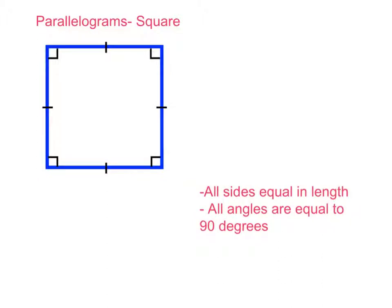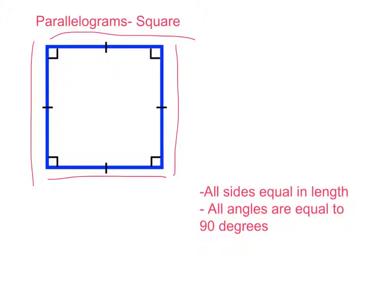Squares are pretty straightforward. All sides are equal in length — this side equal to this side, equal to this side, equal to this side. We can also tell this because of our annotations. The second property: all angles are equal to 90 degrees — not just opposites, not just some of them, all angles: one, two, three, four. Those are the two properties of a square: all sides are equal in length, and all angles are equal to 90 degrees.